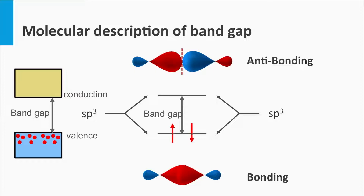Let's consider the example of silicon again. For silicon, the far majority of electrons will fill up the lowest bonding state. These lower bonding states reflect the valence band as introduced earlier. The antibonding states correspond to the conduction band and are hardly occupied by any electrons. The gap between the bonding and antibonding states corresponds to the band gap.